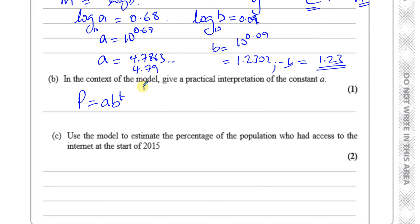So basically, the constant A is the Y-intercept when T equals 0. P is equal to A when T equals 0. So therefore, A is the percentage of the population who had internet access at the start of 2005. That's what A stands for, the beginning, the initial, because when T is 0, you've got P equals A.